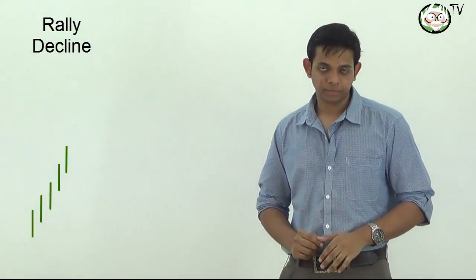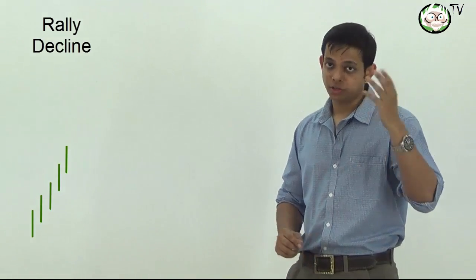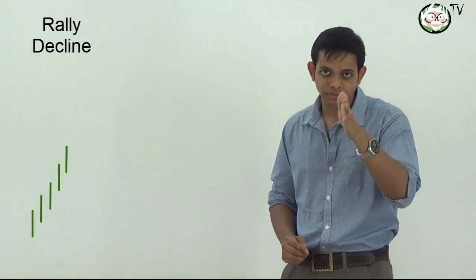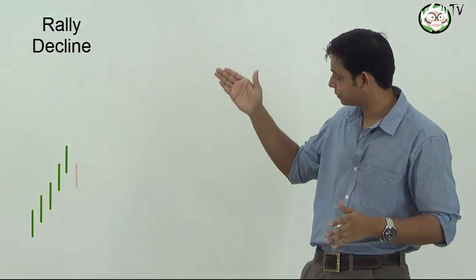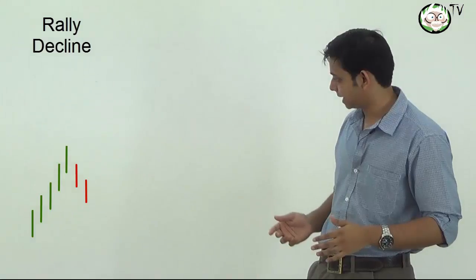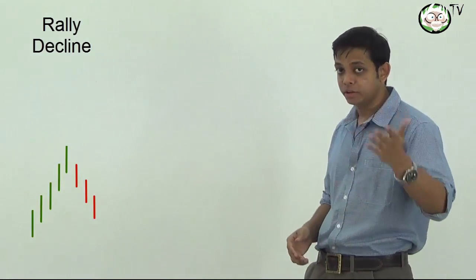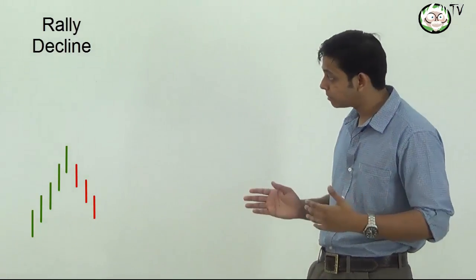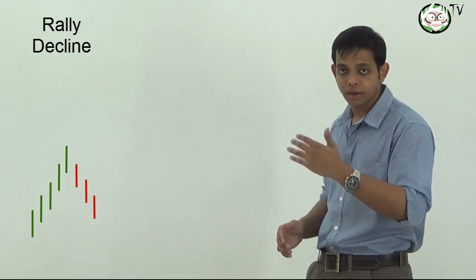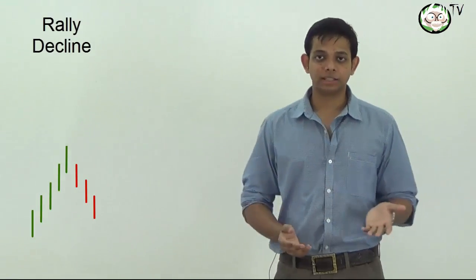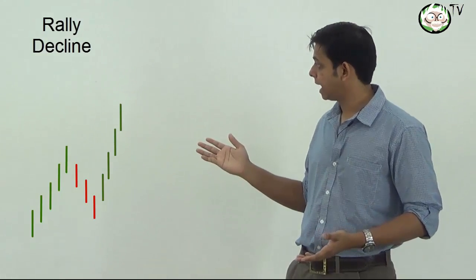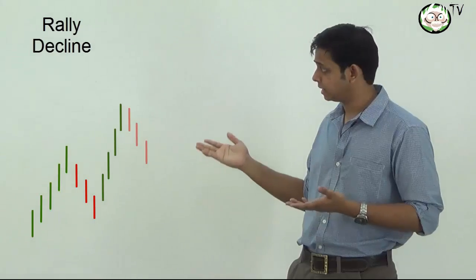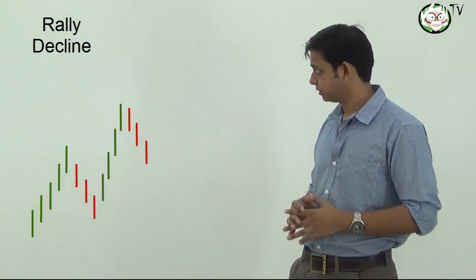Also remember in a real market situation it may not happen consecutively but a general move up is still considered a rally. A decline is just the opposite. The market falling down each consecutive bar, breaking the previous bar's low and making a lower low. Here is another rally which makes a new high and here is another decline.